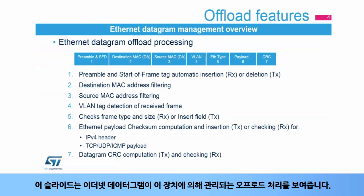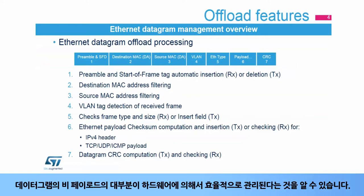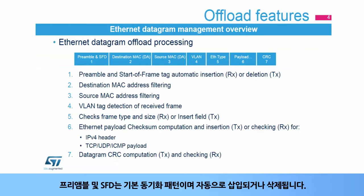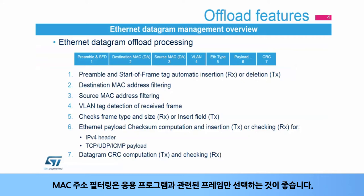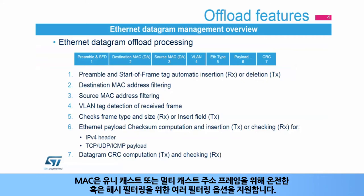This slide presents the offload processing managed by the peripheral on an Ethernet datagram. You can see that most of the non-payload part of the datagram is efficiently managed in hardware. The preamble and SFD are basic synchronization patterns and are inserted or deleted automatically. MAC address filtering is recommended to select only the frames that are relevant for your application. The MAC supports multiple filtering options for unicast or multicast address frames and perfect or hash filtering.